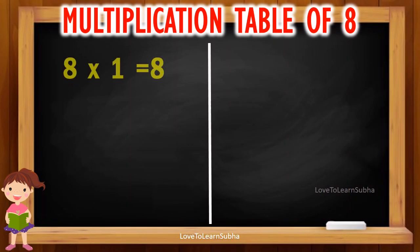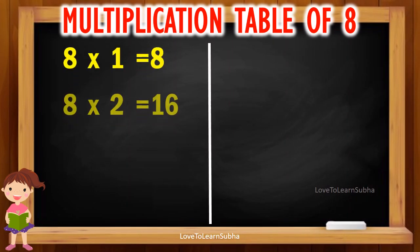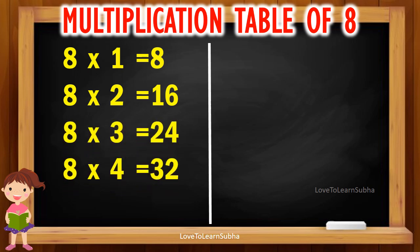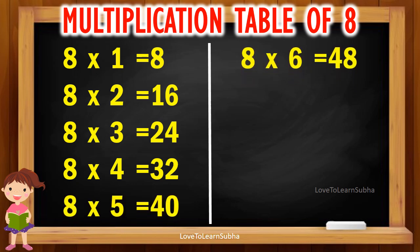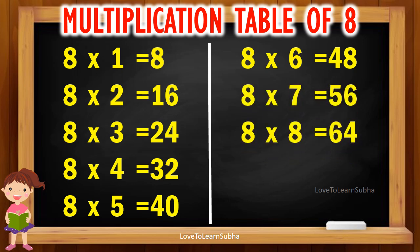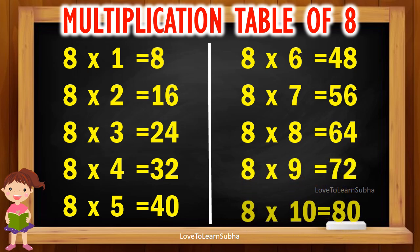Multiplication table of 8. 8 1s are 8, 8 2s are 16, 8 3s are 24, 8 4s are 32, 8 5s are 40, 8 6s are 48, 8 7s are 56, 8 8s are 64, 8 9s are 72, 8 10s are 80.